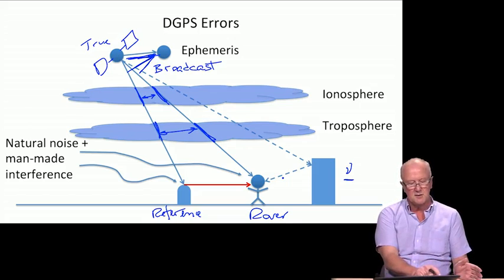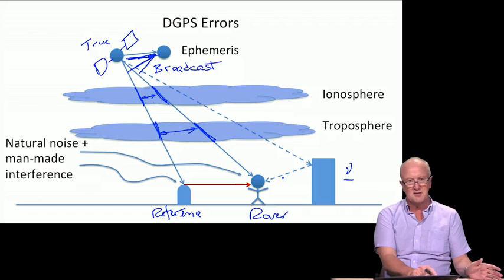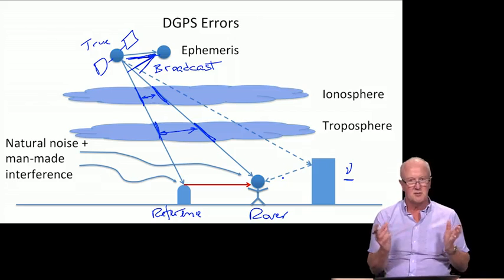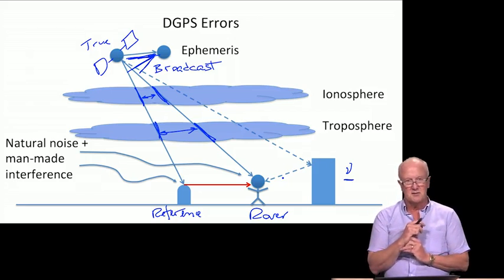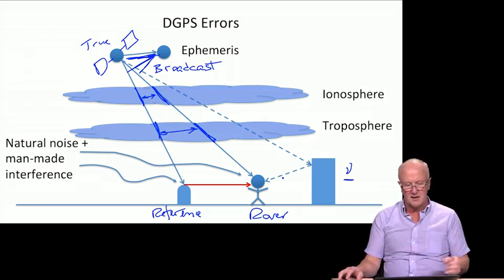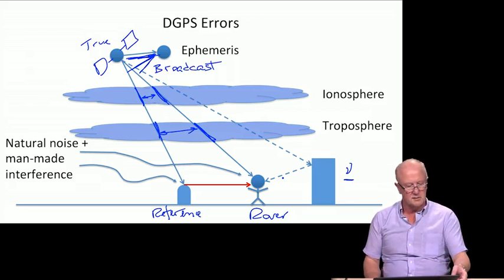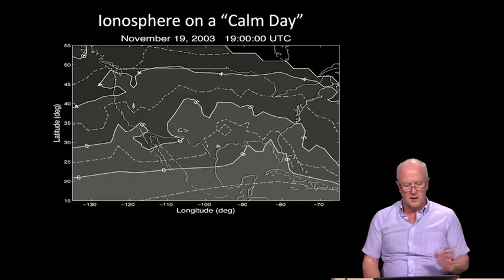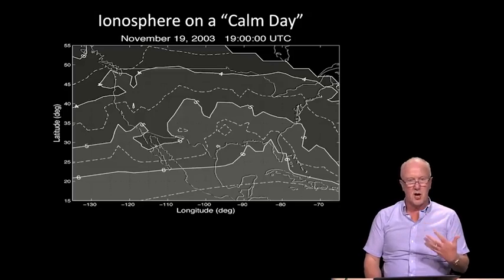Similarly, natural noise or radio frequency interference from man-made sources tends to affect the reference and the rover very differently. So those are examples of terms that survive differential GPS error processing. Let's take a look at how this comes together on a calm day, beginning with delta I.